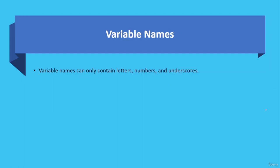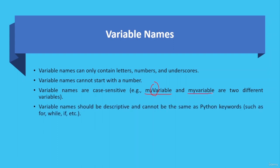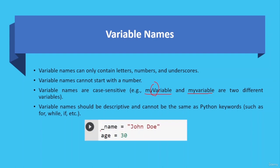Variable names can only contain letters, numbers, and underscores, but variable names cannot start with a number. Variable names are also case-sensitive — for example, 'myVariable' with capital V and 'myvariable' with all lowercase are two different variables. Variable names should be descriptive and cannot be the same as Python keywords such as 'for', 'while', 'if', etc. You can start a variable with an underscore, or combine numbers within the name, but not at the start.